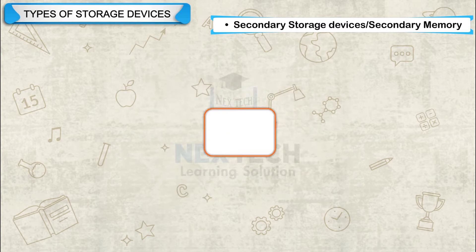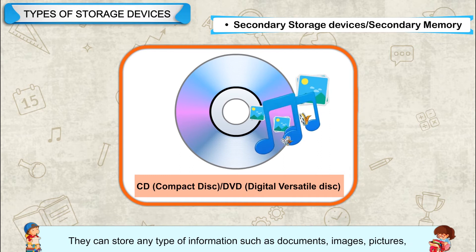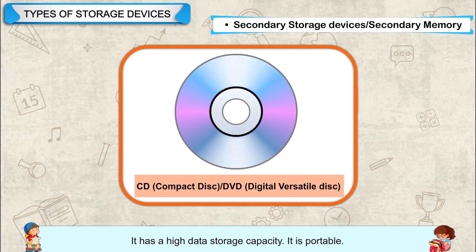CD, or Compact Disk, and DVD, or Digital Versatile Disk, are circular in shape. They can store any type of information such as documents, images, pictures, games, software, etc. They have high data storage capacity and are portable. A CD can store up to 700MB of data.